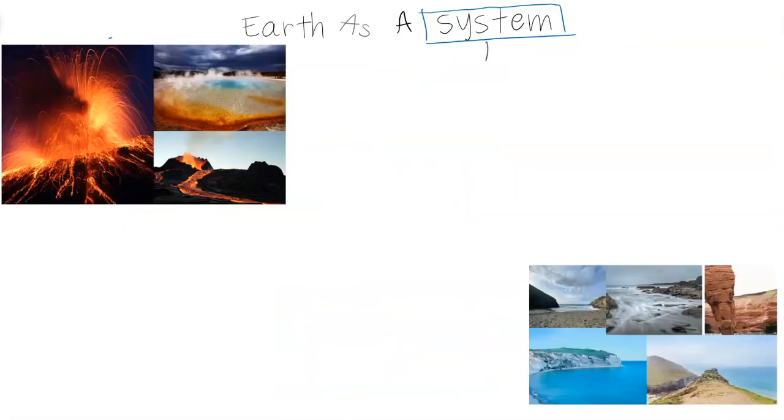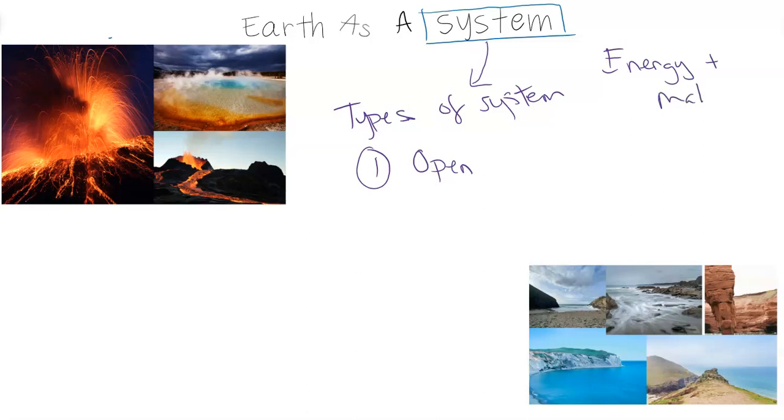So looking at a system, there are different types of systems. And to begin breaking down this system, we need to know what kind of system the Earth is. So the first type of system is called open. Now, when we talk about the system, we're looking at how energy and matter move, circulate, behave within these systems. So it's all based on these two attributes of energy and matter.